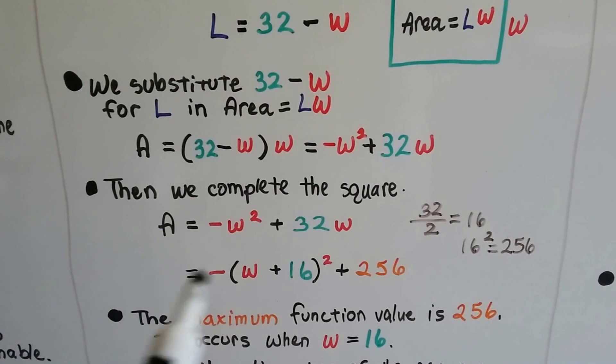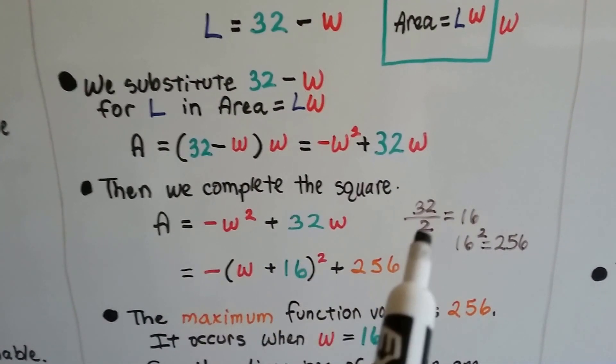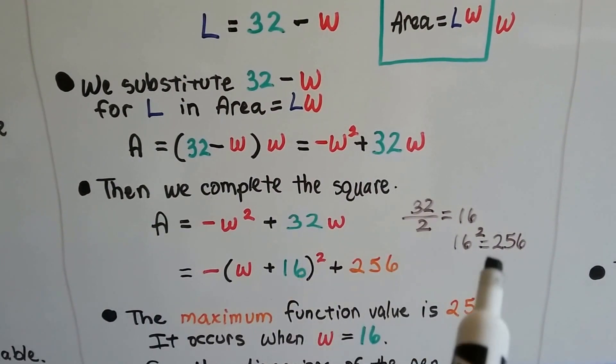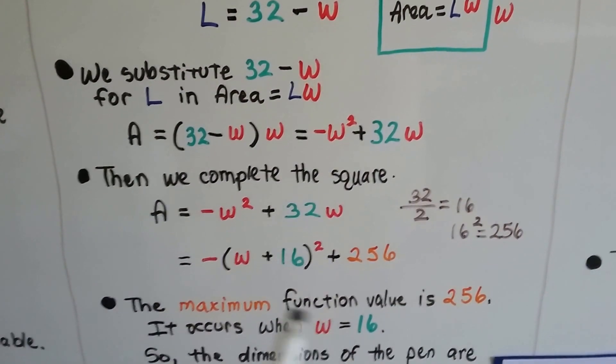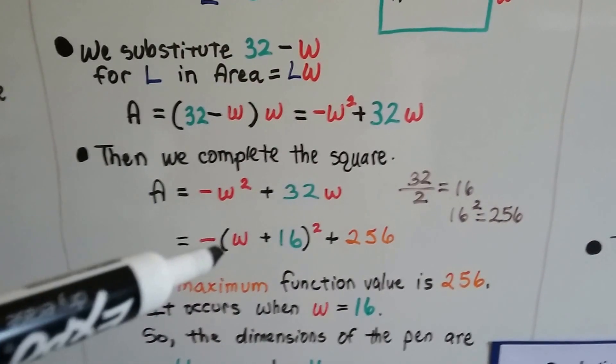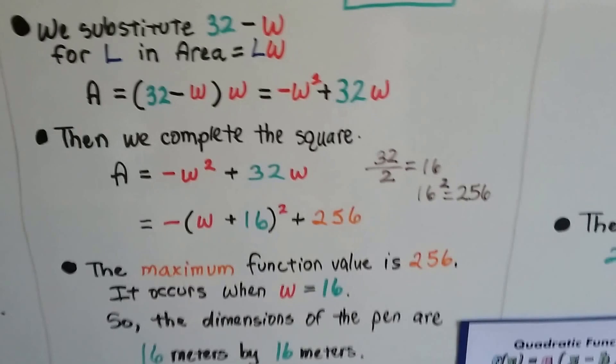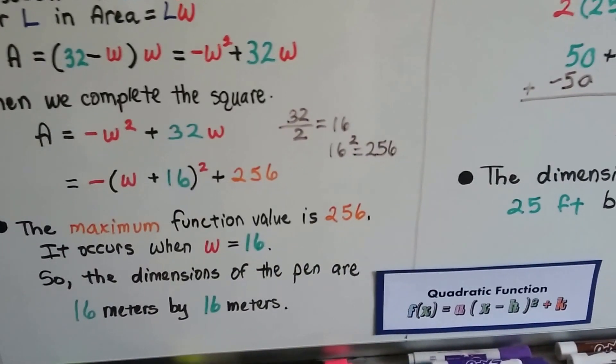All we have to do now is complete the square. We divide this value right here in half, we get 16, and then we square it, and we get 256. So now we have -(W + 16)² + 256 in that quadratic form.